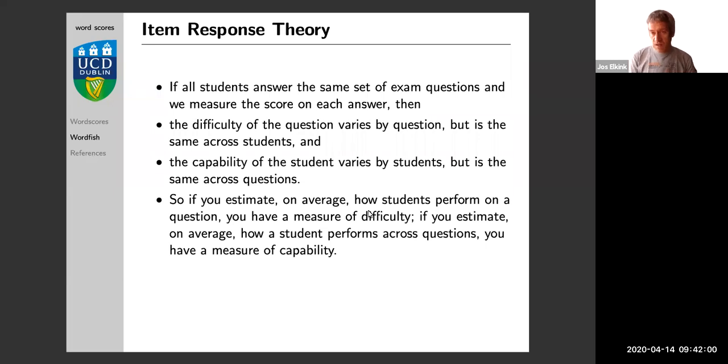So we don't know, and statistically we cannot separate those two. So we have these two latent variables, these two unobserved variables, ability and difficulty, and we cannot separate the two when you give an answer to a question.